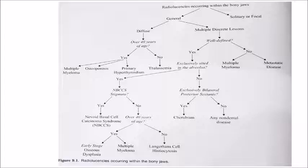In ill-defined lesions, it can be multiple myeloma or metastatic disease. Other lesions appearing as radiolucent include nevoid basal cell carcinoma syndrome. In the alveolus region, you can suspect cherubism.